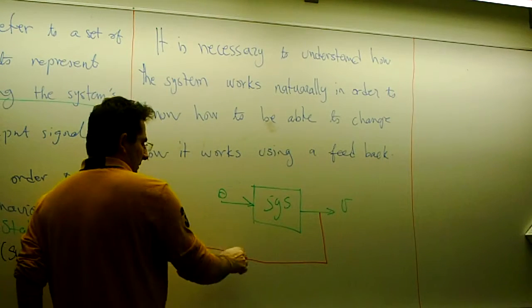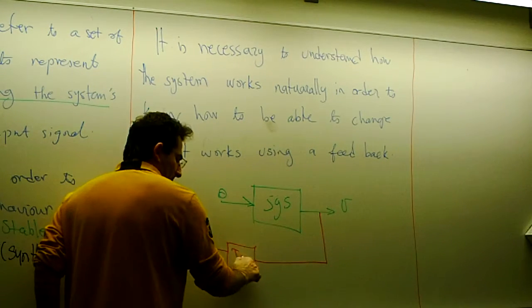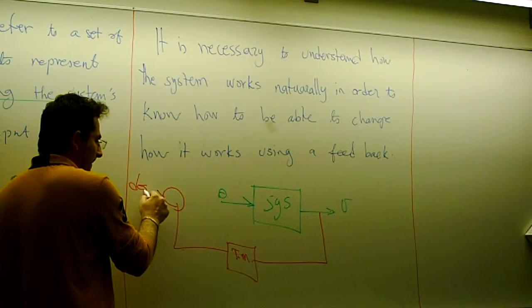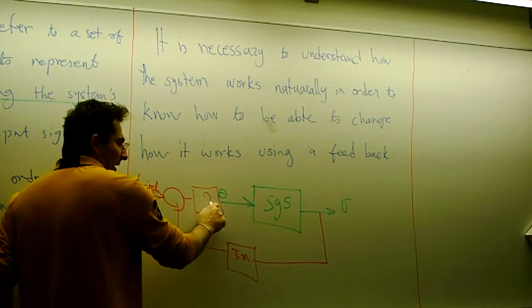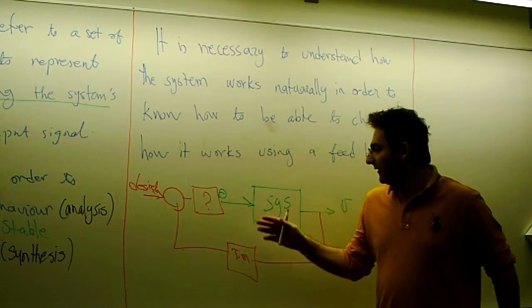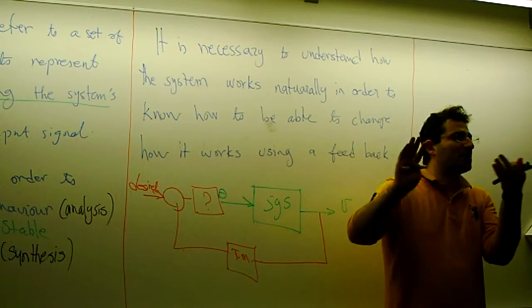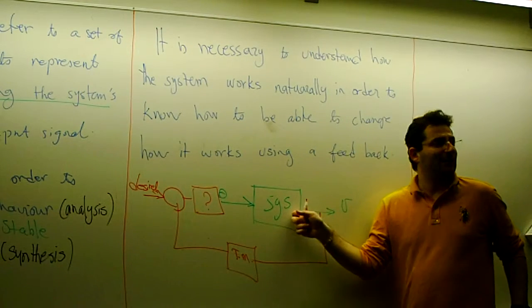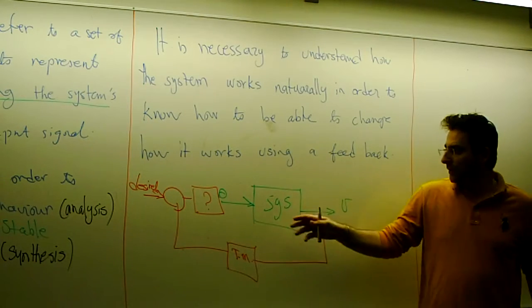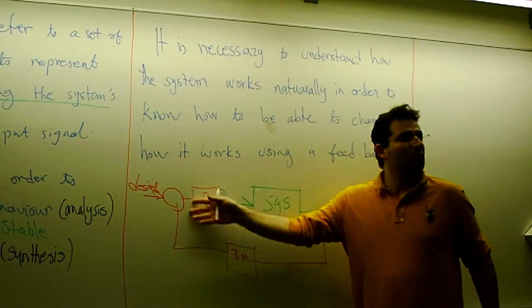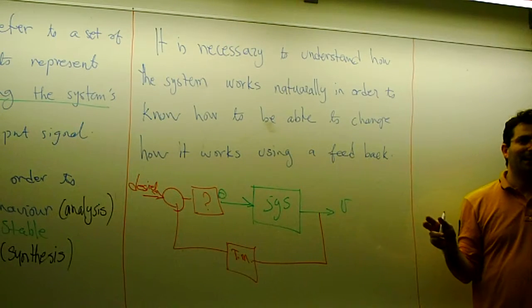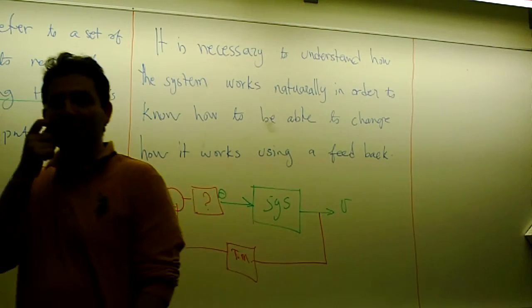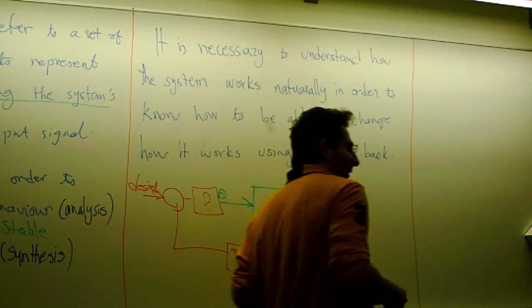In the cruise control example, a tachometer gets the speed, we compare it with what is desired, and then another system tells us to do more combustion if we need to increase the speed. But to design that feedback part, we need to first model the system. If I don't know how it works, I cannot calculate what the input should be, because I don't know what the output will be for that specific input. This is why analysis plays a very important role — we will spend a whole lecture on this.